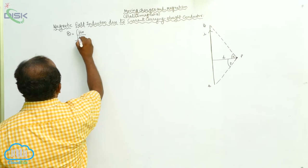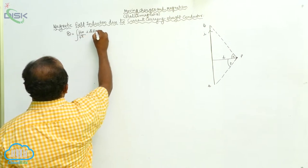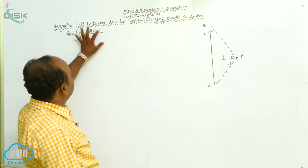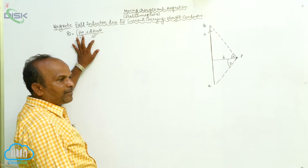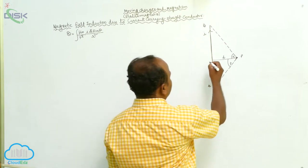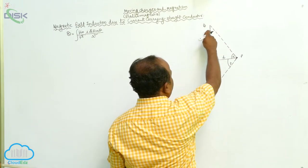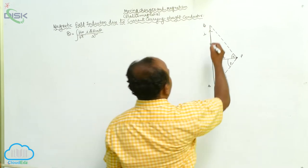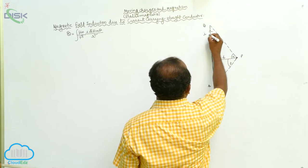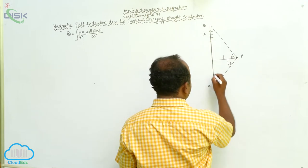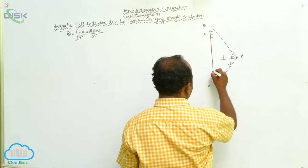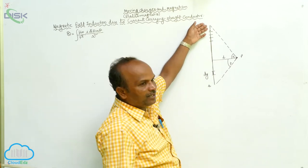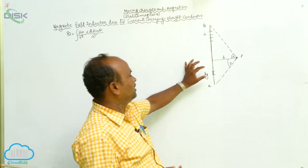By Biot-Savart's Law, B equals the integration of (μ₀/4π) · I · dl · sinθ / r². This is the formula. Here, the current carrying conductor is divided into a number of infinitesimal parts. Let us consider one such portion. The thickness of the portion is dy, so dl = dy. Through this small element dy, the current is passing — this is called the current element.